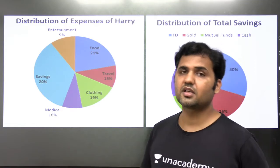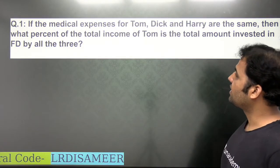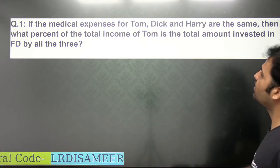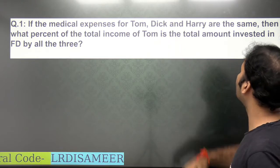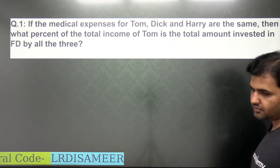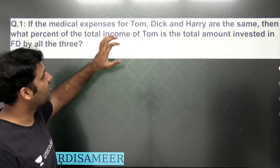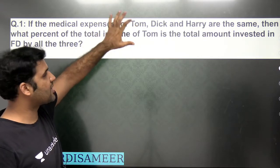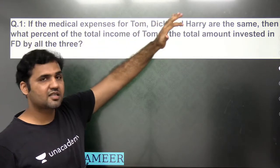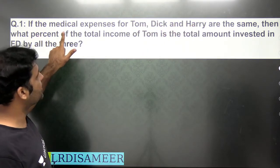Let's look at the first question. It says: if the medical expenses for Tom, Dick and Harry are the same, then what percentage of the total income of Tom is the total amount invested in FD by all three? Some of you might get confused by reading the statement, but the important part is to properly understand it. The medical expenses of Tom, Dick and Harry are equal.